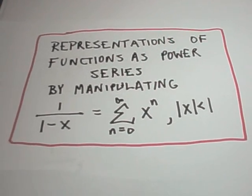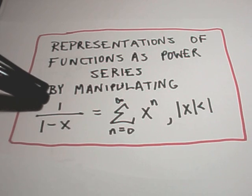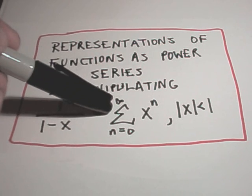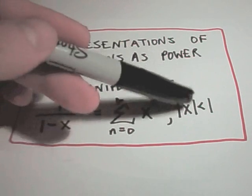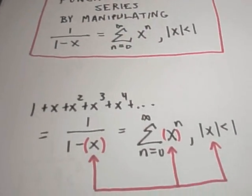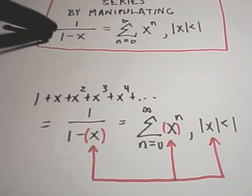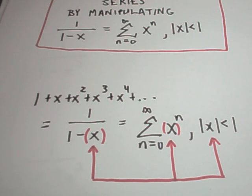In this video I'm going to talk about representations of functions as power series. The way we're going to do these is by manipulating the power series representation for the function 1 over 1 minus x. It turns out you can write 1 over 1 minus x as the summation from n equals 0 to infinity of x raised to the n power, where the absolute value of x is less than 1. This is a common trick — you come up with a power series representation for one function and manipulate it to find others.